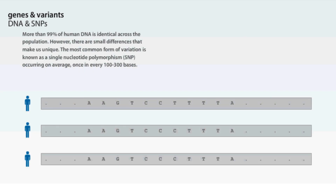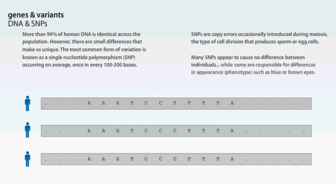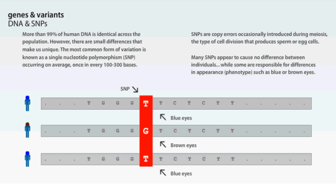More than 99% of human DNA is identical across the population. However, there are small differences that make us unique. The most common form of variation is known as a single nucleotide polymorphism, or SNP, occurring on average once in every 100 to 300 bases. SNPs are copy errors occasionally introduced during meiosis, the type of cell division that produces sperm or egg cells. Many SNPs appear to cause no difference between individuals, while some are responsible for differences in appearance or phenotype, such as blue or brown eyes. Other combinations of SNPs are thought to influence risk of disease and response to drugs.